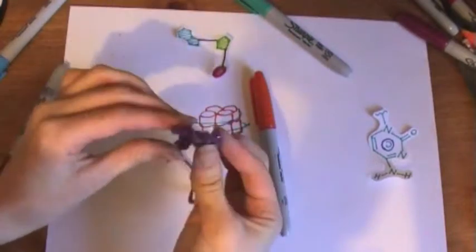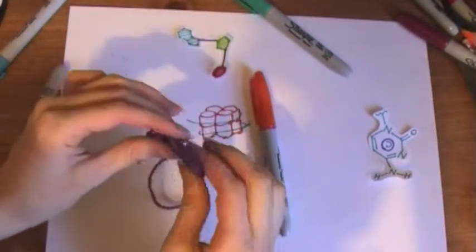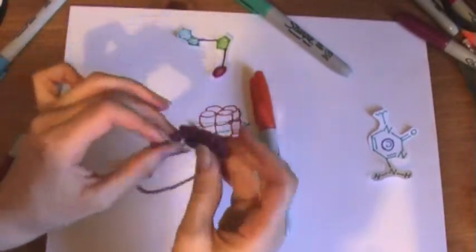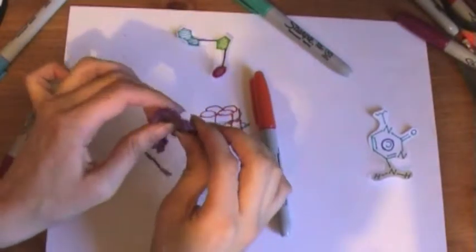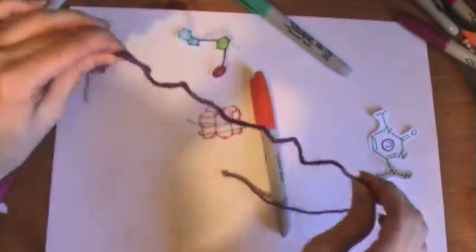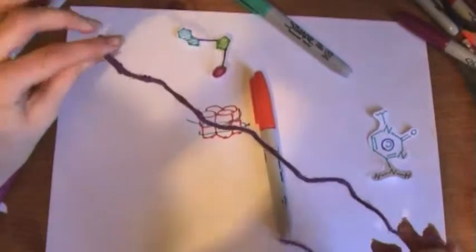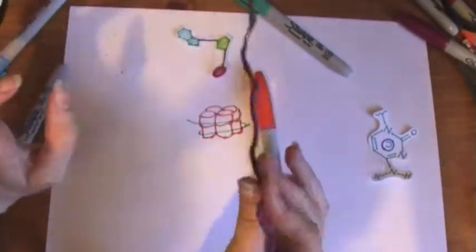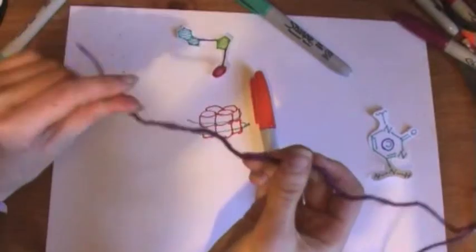So DNA is really tightly packed into the nucleus because, well, it has to be. They say that if you've got all the DNA in your body and stretched it all out, then it could go around the solar system, which is pretty cool.